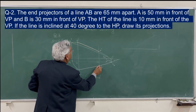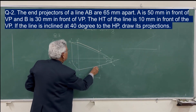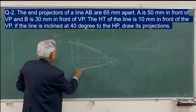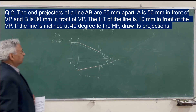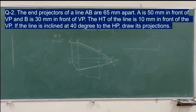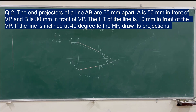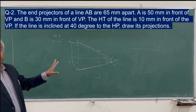Now join A dash with H dash and you get point B dash. So this is the final elevation of the line satisfying the given conditions, and this is the plan. Once you know the plan and the elevation, you can find the true length, theta, and phi. That is question number 2.